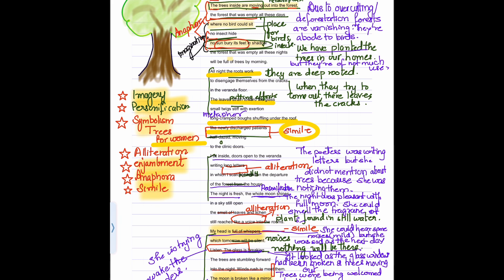The first paragraph says, the trees inside are moving out into the forest. The forest that was empty all these days where no bird could sit, no insect hide, no sun bury its feet in shadow. It is personification because the trees are personified as if they are running out.